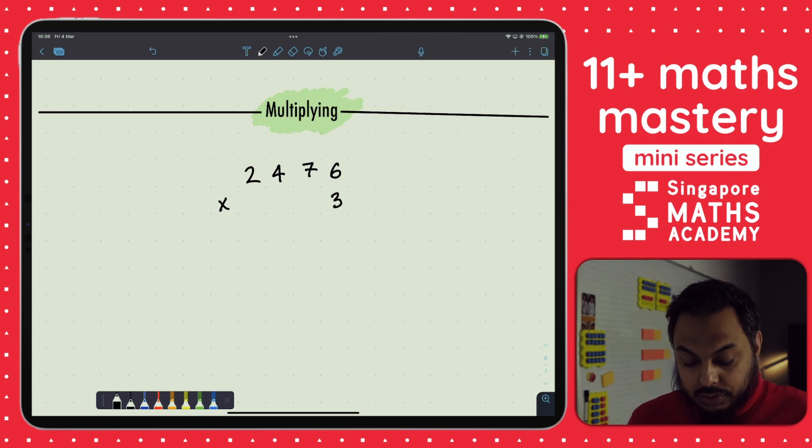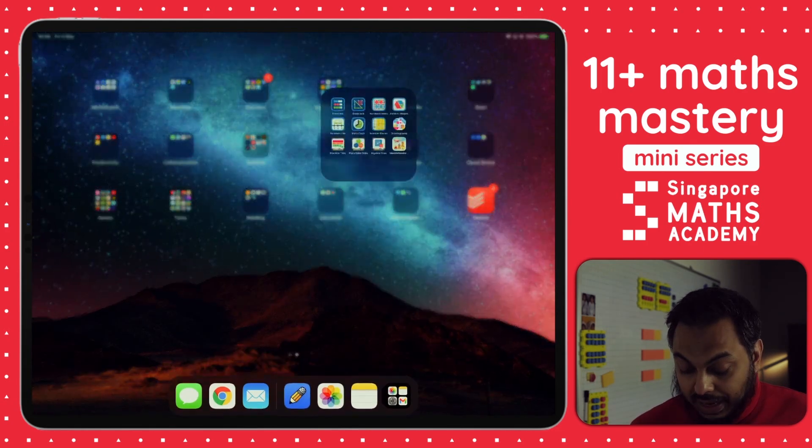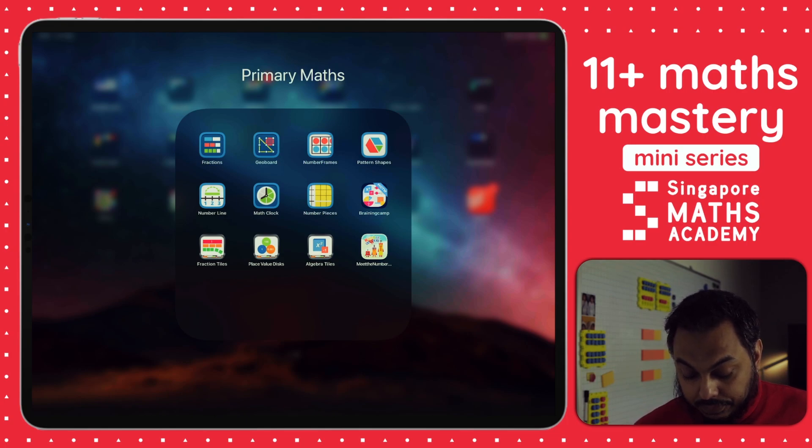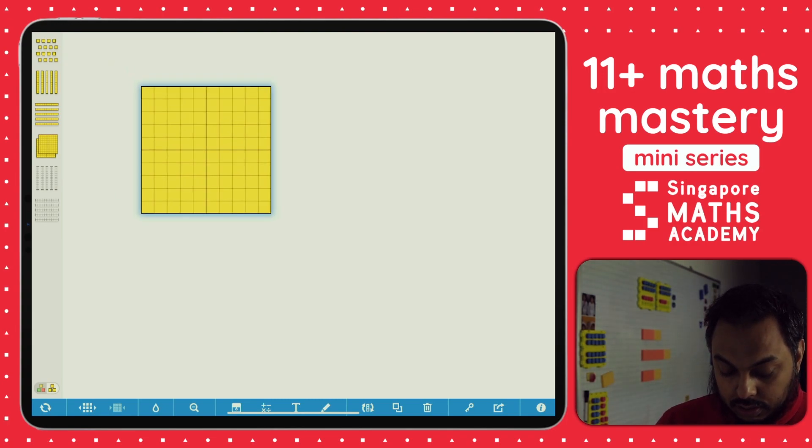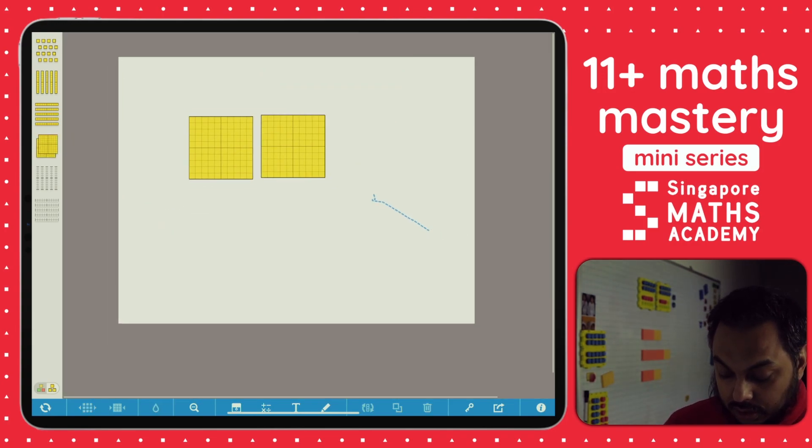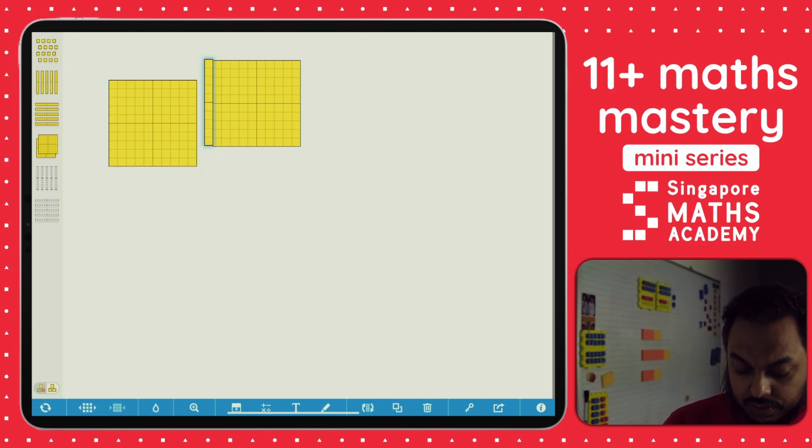So we've got a question here: 2476 multiplied by three. Before we jump onto this, I want to make sure that we understand what multiplication really is, what it means. When we've got something a bit smaller than that, let's go into one of our apps. Let's say we've got something like 213. So 213, we want to multiply 213 by three. So what do we do? What does it mean actually?